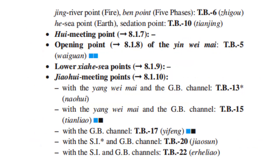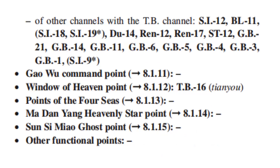Opening point of the Yang Wei Mai is TB5. Jiao Hui meeting point with the Yang Wei Mai and GB channel: TB13. With the Yang Wei Mai and GB channel: TB15. With the GB channel: TB17. With the SI and GB channel: TB20 and TB22. Other channels meeting with the TB channel include: SI12, Bladder 11, SI18, SI19, Du 14, Ren 12, Ren 17, Stomach 12, GB21, GB14, GB11, GB6, GB5, GB4, GB3, GB1, SI9.